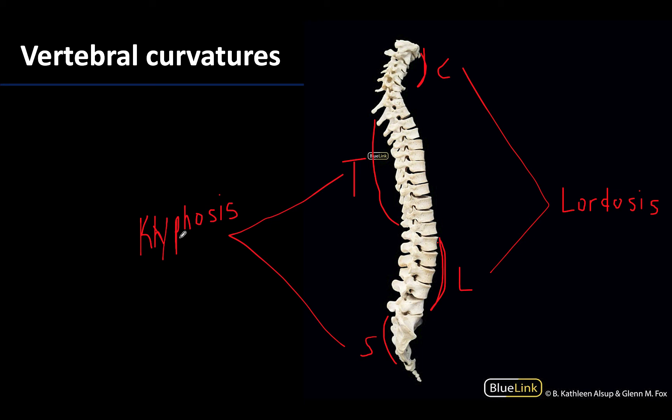These are normal curvatures — there may be a bit of abnormality in this image, perhaps just due to how it was set up, but the normal curvatures are part of the functional design of the vertebral column, allowing for stability and shock absorption rather than having one straight column, which would cause other issues.